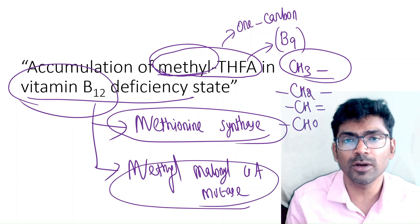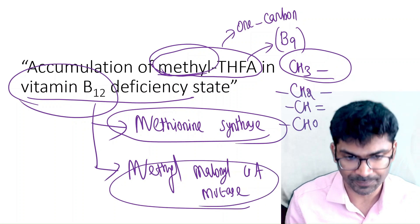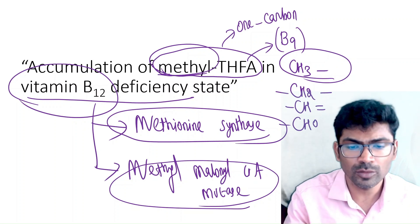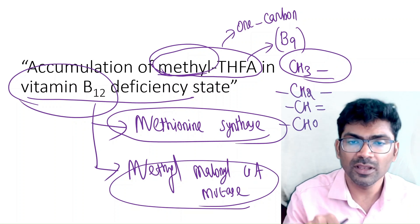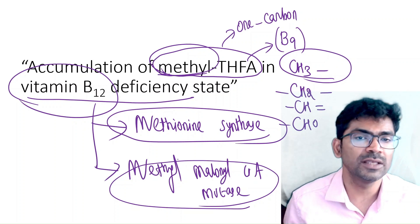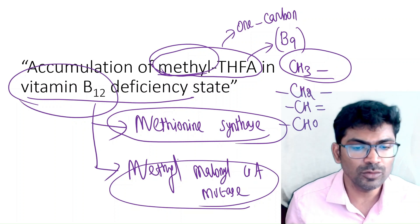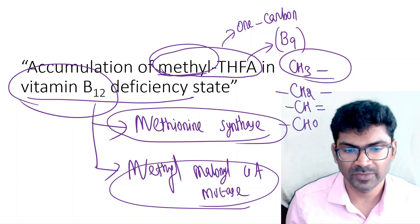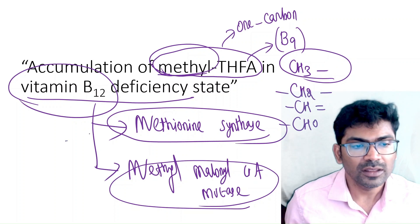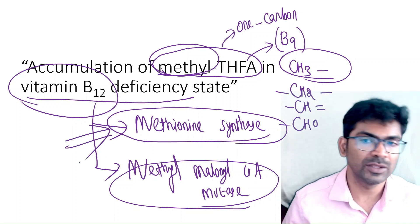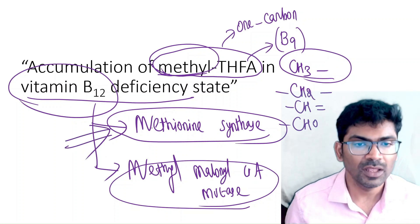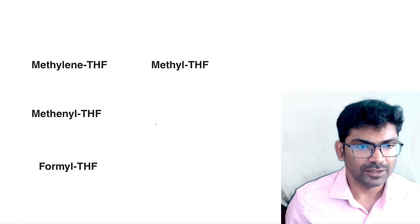Methyl malonyl-CoA mutase is the one involved in methyl malonic aciduria — B12 deficiency may lead to methyl malonic aciduria because methyl malonyl-CoA is not converted to succinyl-CoA. In this video, we will focus on methionine synthase only.